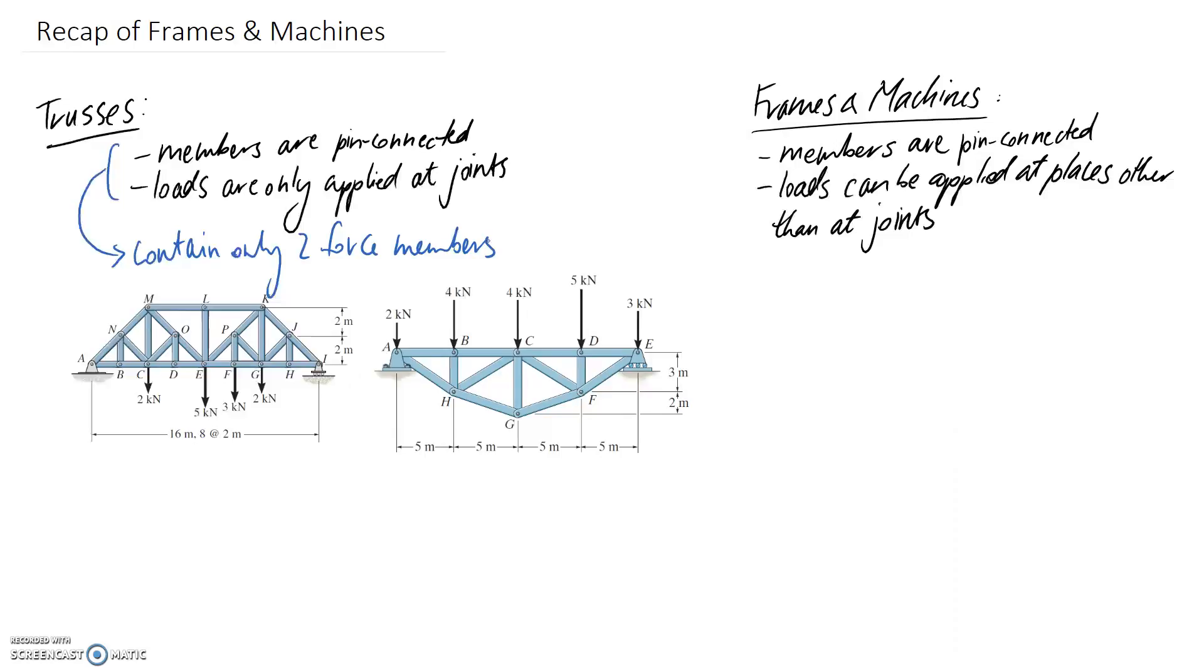So if we move on to frames and machines, the point of difference is where the loads can be applied. So here we're saying that loads can be applied at places other than at the joints.